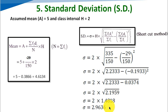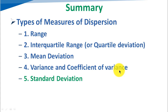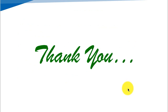So this is the standard deviation using the shortcut method. In this video we discussed standard deviation. In previous videos we discussed other types of measures of dispersion: range, interquartile range, mean deviation, variance, and coefficient of variance. Links to those videos are in the description. Please like this video and subscribe to my channel. Thank you for watching.